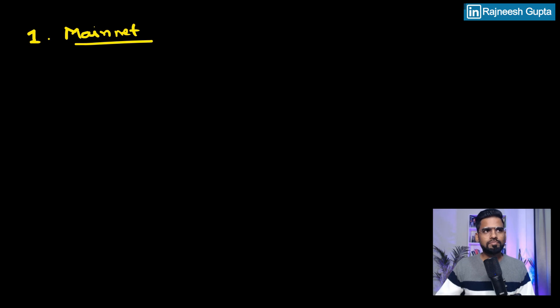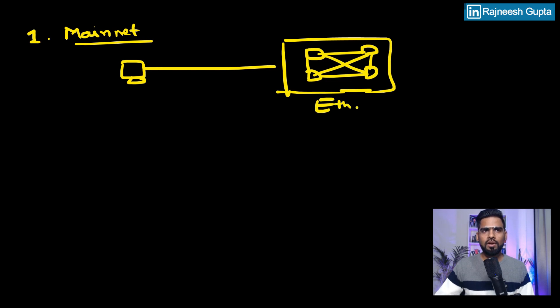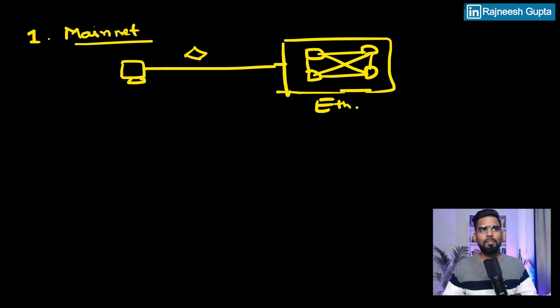How exactly does a developer connect to the Ethereum network? There are a couple of ways. The first is they can make use of the real network, which is the mainnet. In the mainnet, the developer connects to the Ethereum network directly, but the problem is they have to pay real money — they have to pay the gas fee, which is huge. It's not really advisable and nobody really does that.